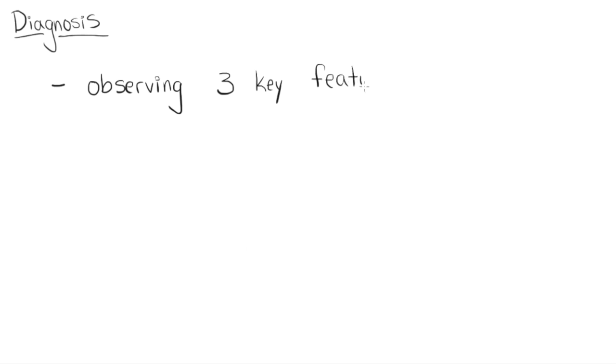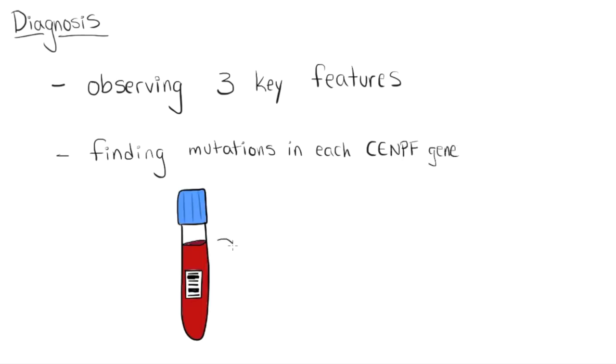Diagnosis of Strömme syndrome. The diagnosis of Strömme syndrome is made either by clearly observing the three key clinical features or by finding a mutation in each copy of the CENPF gene.